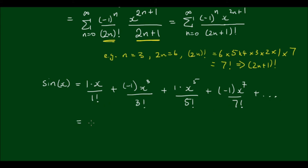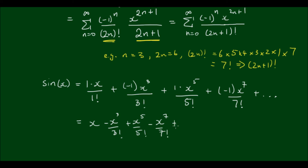Tidying this up, we get: x minus x to the power of 3 over 3 factorial, plus x to the 5th over 5 factorial, minus x to the 7th over 7 factorial, and so on ad infinitum.